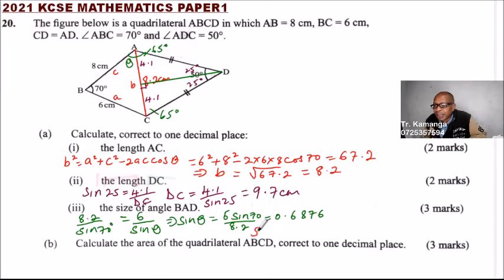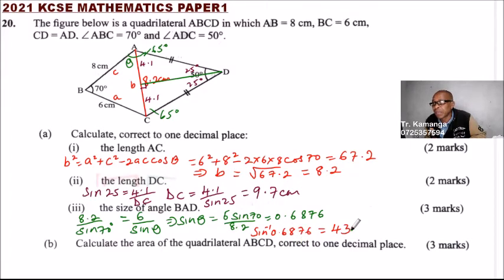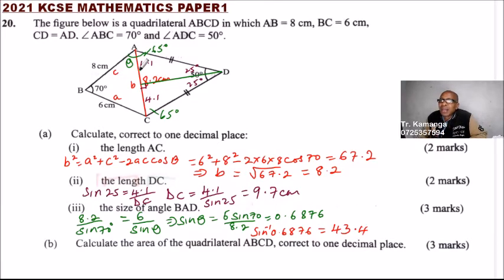Then we say the inverse sine of 0.6876 — using the calculator, pressing inverse then sine, gives us 43.4 degrees. So this angle theta is 43.4 degrees.